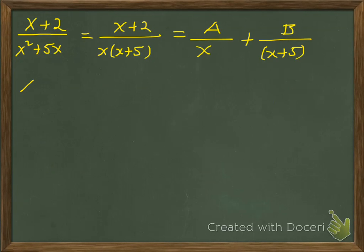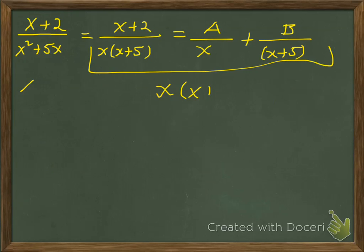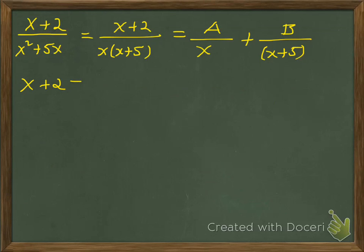We have to figure out what values of A and B will make this true. We're going to multiply everything by x(x+5) to clear the fractions. On the left-hand side we'll have x+2, and on the right-hand side we'll have A times (x+5) plus B times x. So: x+2 = A(x+5) + Bx.